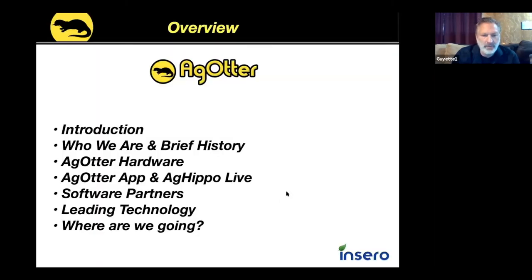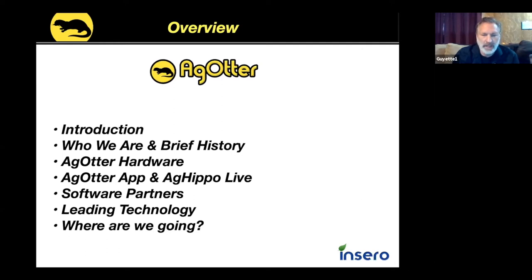Then we'll get into Ag Hippo and the real-time component, talk about some software partners and things coming out in 2021 — including things we're doing with Conservis, furthering our Agrian relationship, and data push back and forth with work orders and jobs. We'll also talk about what we're planning to do going forward, and again we want to hear your feedback on what our priorities should be.